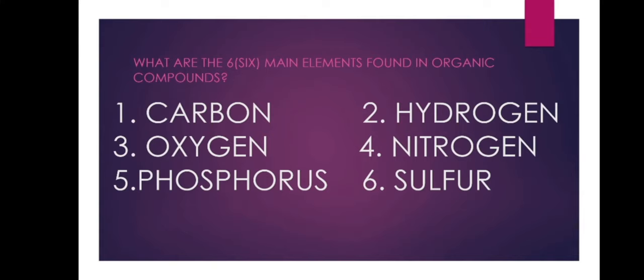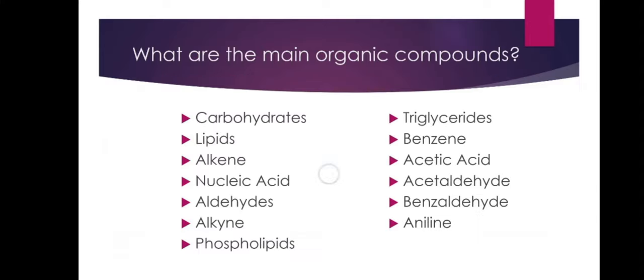What are the six main elements found in organic compounds? They are: 1. Carbon, 2. Hydrogen, 3. Oxygen, 4. Nitrogen, 5. Phosphorus, and 6. Sulfur. What are the main organic compounds?